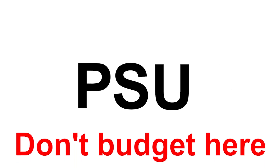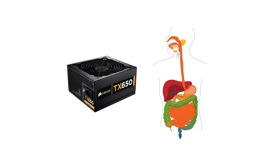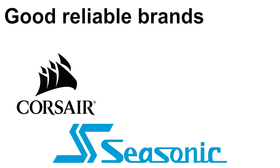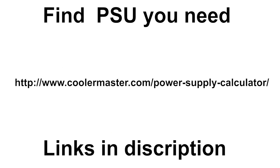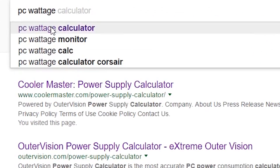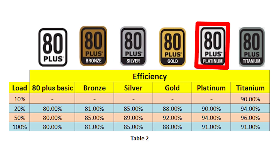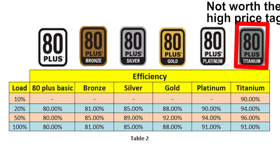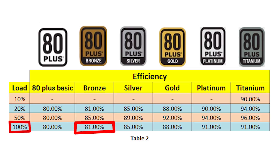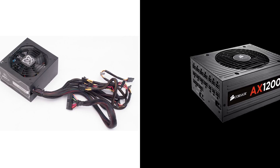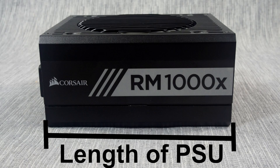The power supply unit — do not go cheap here. It is the digestive system of your PC; if you don't give it enough wattage, your computer will die. Go for well-known brands like Corsair, Seasonic, and Cooler Master. Use a PC wattage calculator, input your components, and add 150 watts to that value just to be safe. Bronze, Silver, Gold, and Platinum certificates indicate efficiency — Bronze is 80% efficient and Platinum up to 94% at full load. If you're worried about cable management, get a modular power supply.